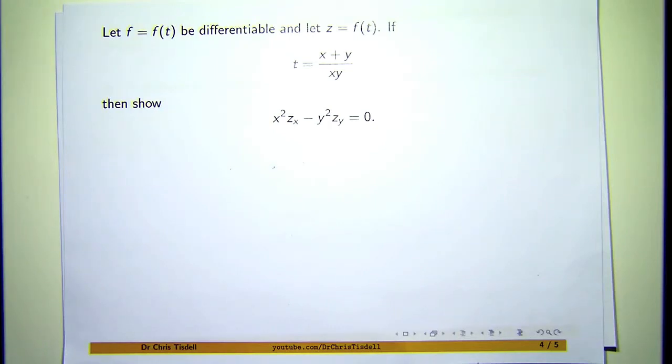So here's a question from multivariable calculus, and it's designed to show you how the chain rule can be used to differentiate a function and show that a given partial differential equation has one form of a solution.